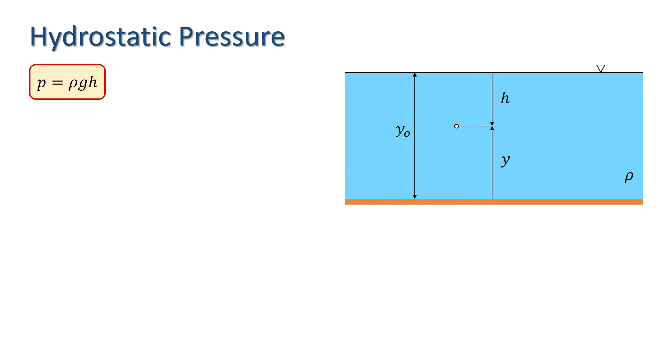We can rearrange our equation to give h in terms of p, rho, and g. h is known as the pressure head, and it is expressed in meters of fluid of a given density.